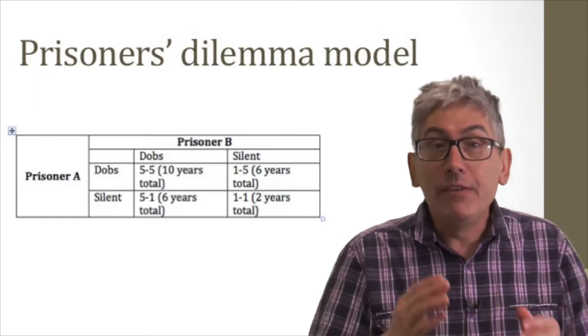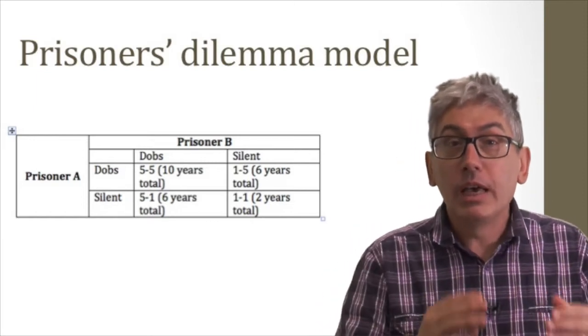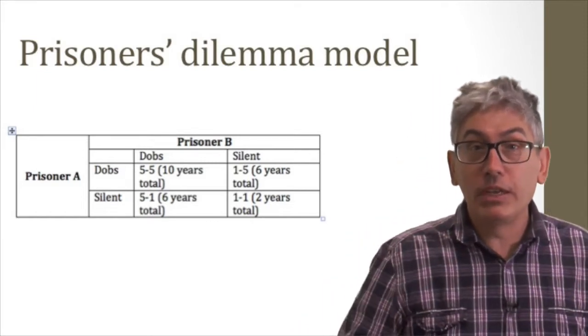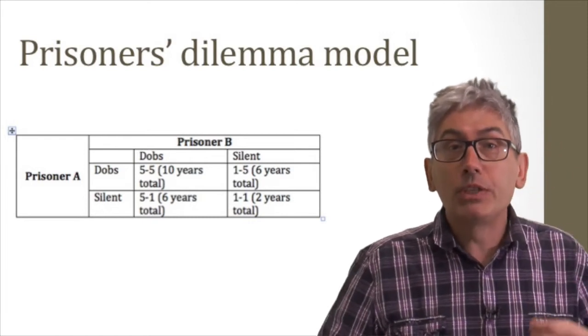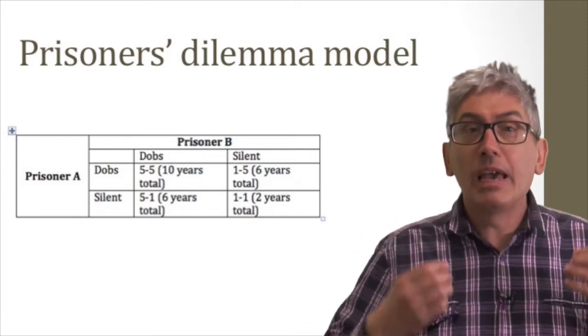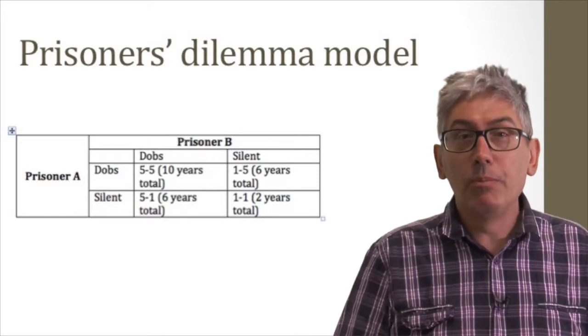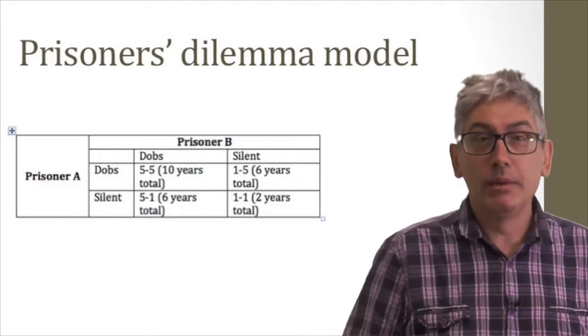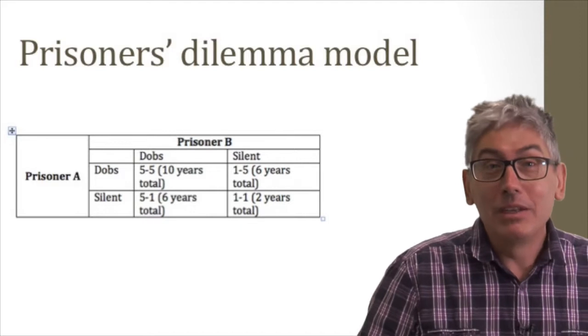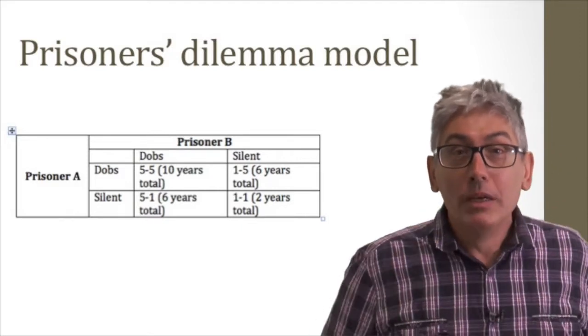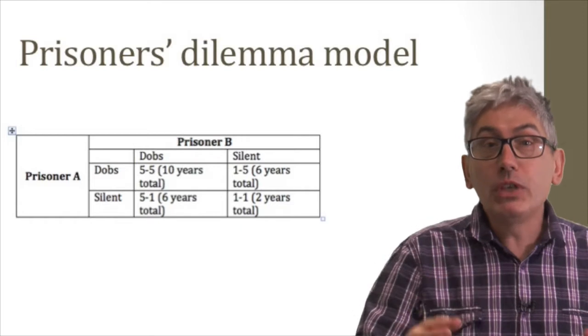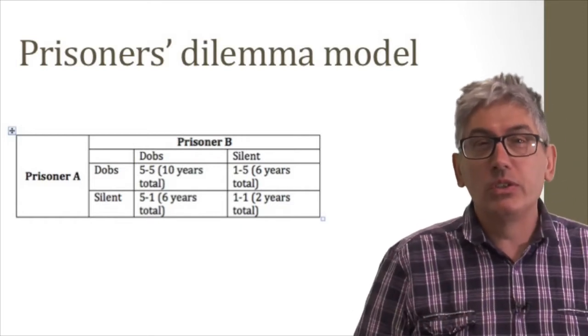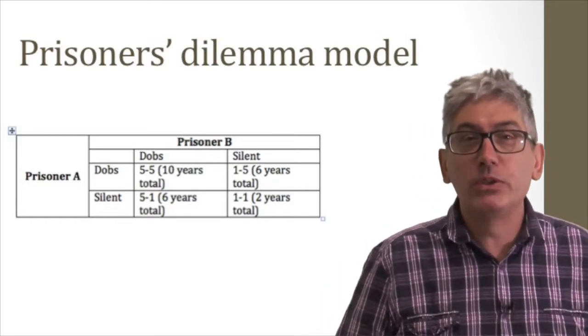My lad. If each dobs on the other then they will end up getting a severe sentence but not the whole ten years because they will have demonstrated that they acted together. To my mind the logic gets a bit ropey here. They're also aware that if they both stay stum they will be done for a lesser crime and will receive a really short sentence, say one year's porridge as they used to say.